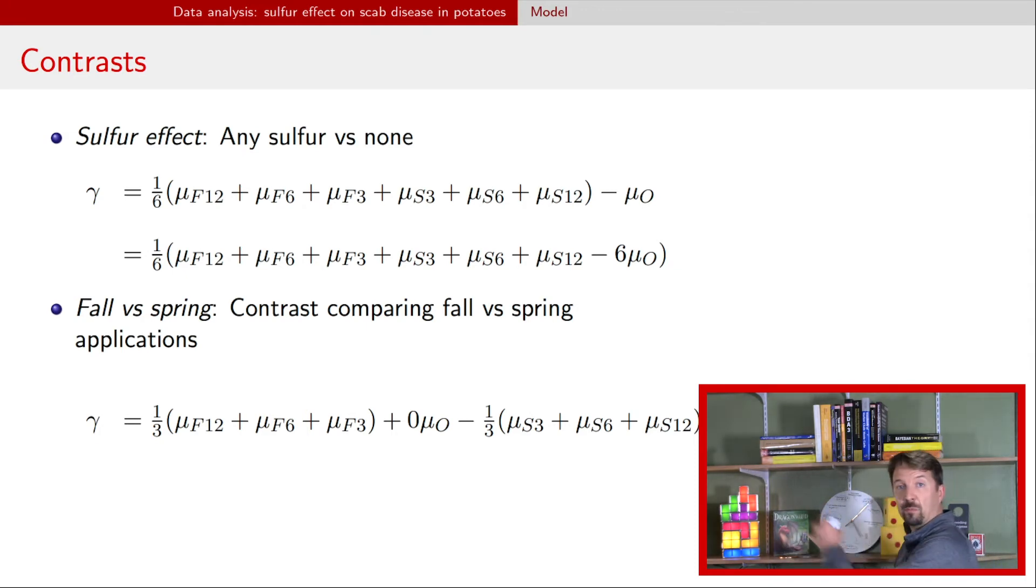I'm going to do the same thing I did before. I'm going to pull out the one third. If I pull out the one third here, you can just see a bunch of ones. And then you got that zero for the mu naught, the no sulfur mean, and then negative one for all the spring.